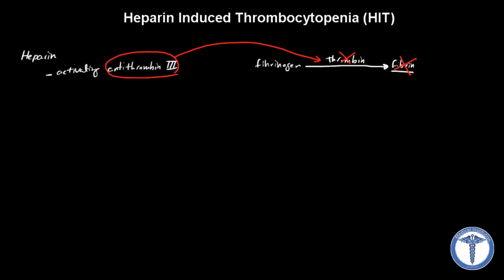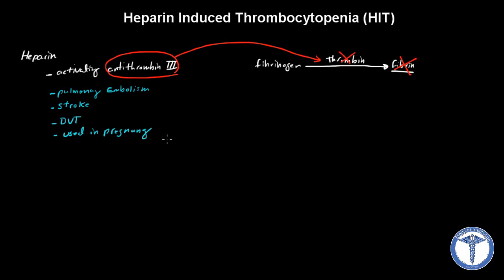Heparin is also an immediate anticoagulant with a short half-life. Therefore, we can use it in conditions such as pulmonary embolism, stroke, and DVT. We can also use it in pregnancy, since it does not cross the placenta. Some of the important side effects of heparin are obviously bleeding, because we are inhibiting production of fibrin, and osteoporosis.